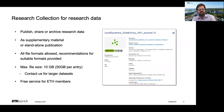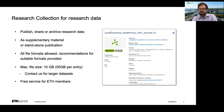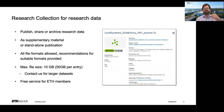What does the Research Collection offer for research data? You can publish, share, or archive research data as well as supplementary material linked to a journal article or similar, or also just as a standalone publication. We allow all file formats, but we do make recommendations for suitable formats — more on this later. The maximum file size is 10 gigabytes and you shouldn't upload more than 50 gigabytes per entry. Please contact us for larger datasets. The Research Collection is a free service for ETH members.